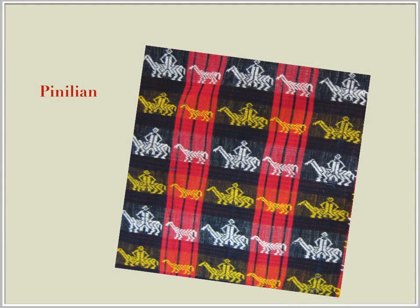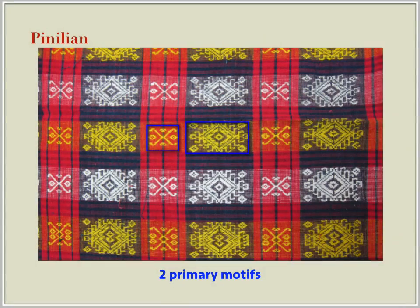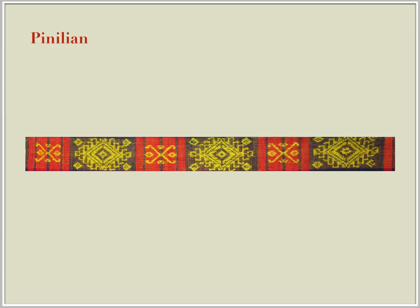Let us begin with the analysis of a blanket woven in the Pinilian technique. The design in a blanket woven in this technique is achieved by varying the ways the horizontal weft threads are inserted across the vertical warp threads. The particular blanket analyzed consists of three panels sewn together. There are two primary motifs, as shown on the screen and enclosed in blue. The motifs are created using 15 different horizontal weft patterns employed in a repeated sequence, each weft pattern floating from left to right at repeated intervals.